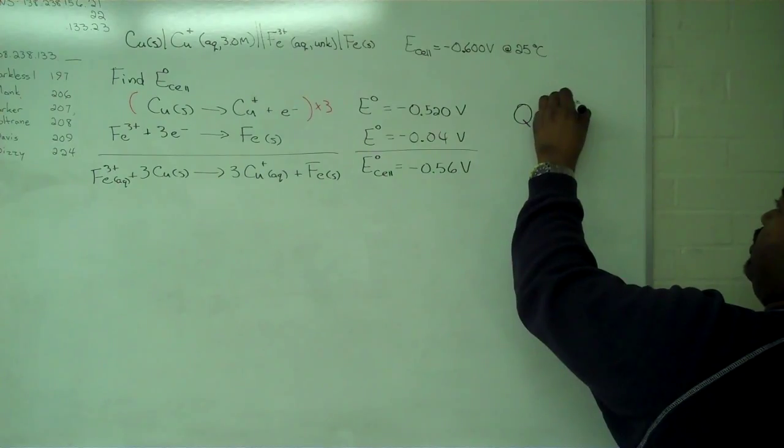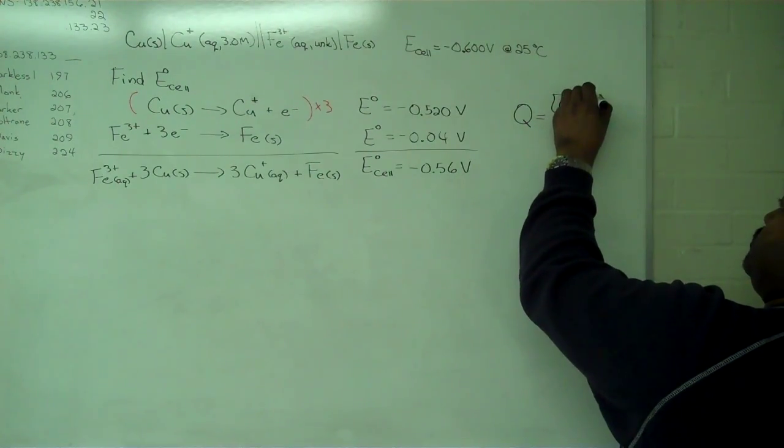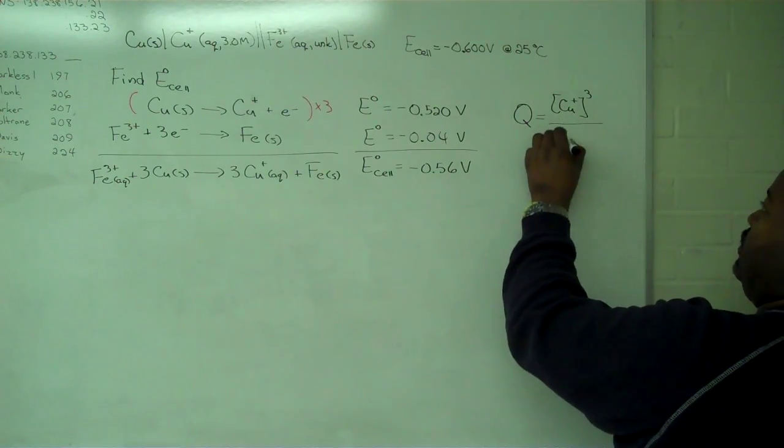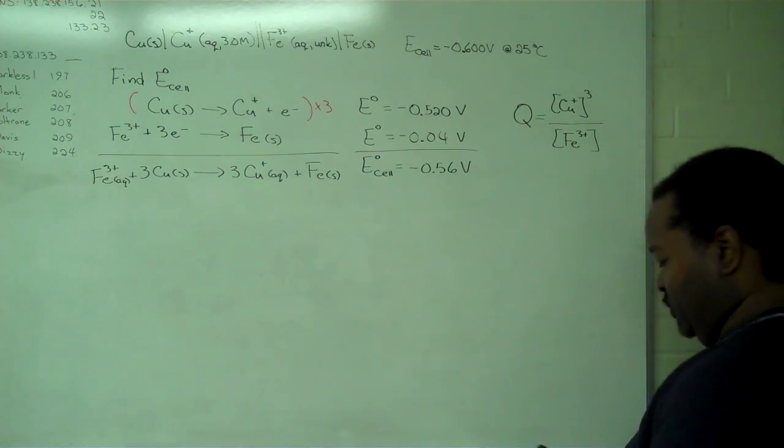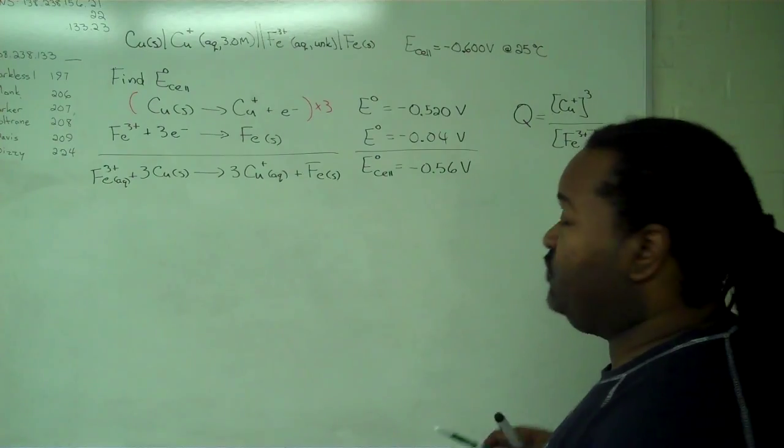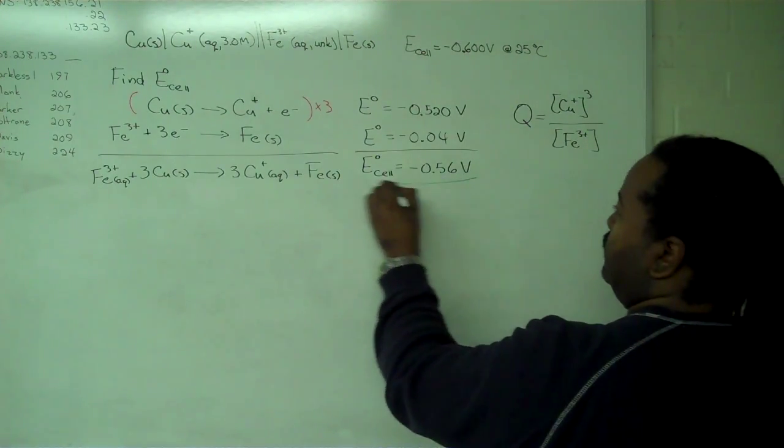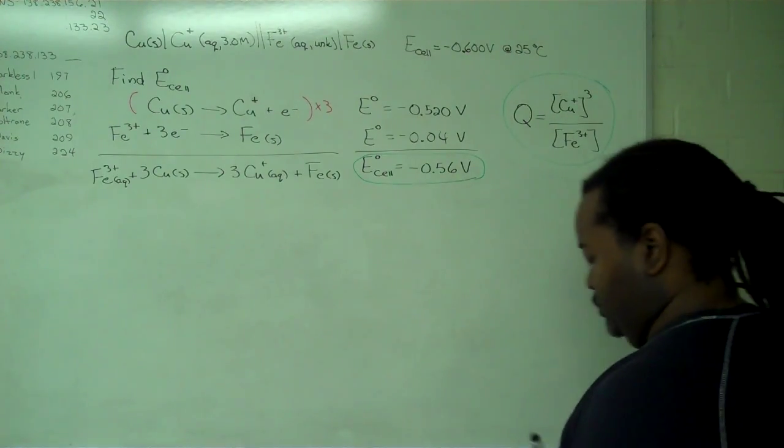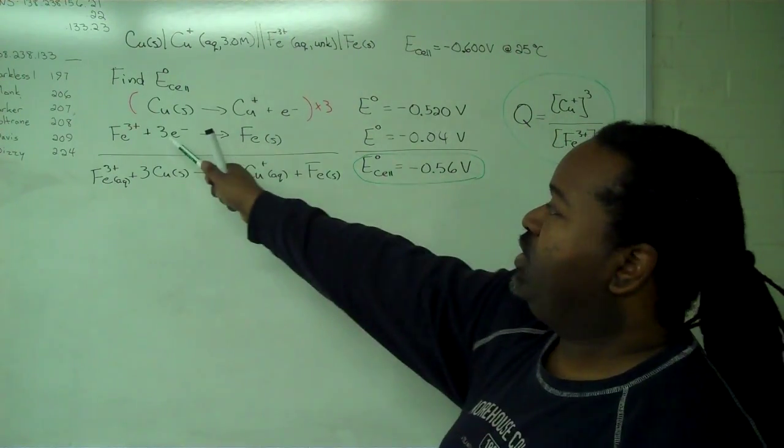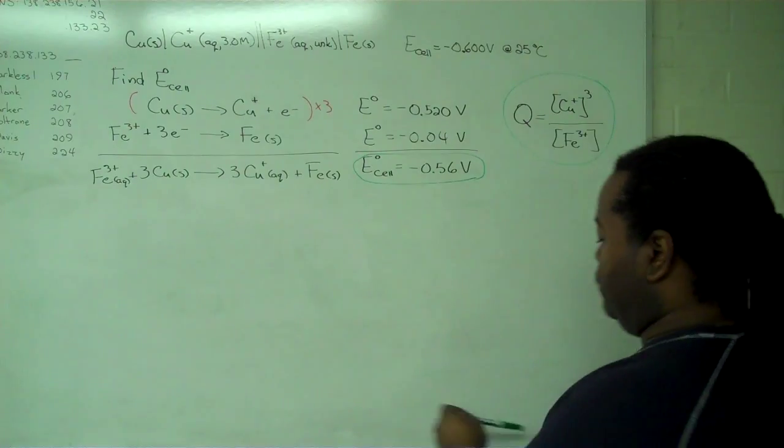it's now possible to write out an expression for Q. We're going to have our copper concentration raised to the third power, divided by our iron concentration. And so these two pieces of information,